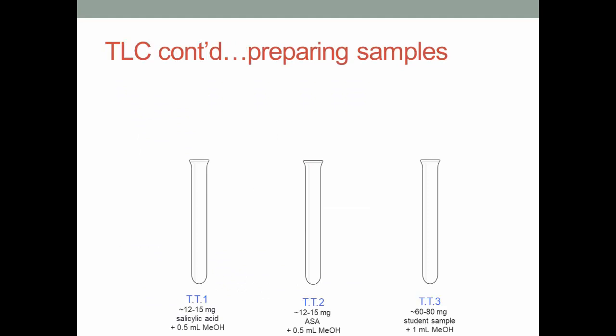We will be preparing three different samples to run on the TLC plate. In the first test tube, put 12-15 mg of salicylic acid. In the second test tube, put 12-15 mg of ASA. And in the third test tube, put 60-80 mg of your sample that you made last week.